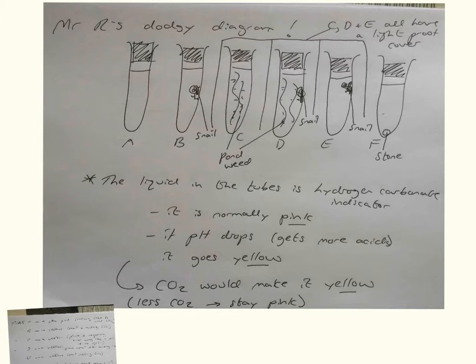And importantly in terms of this, CO2 carbon dioxide is produced. And in all these little tubes we have a chemical called hydrogen carbonate indicator which is normally pink colored.